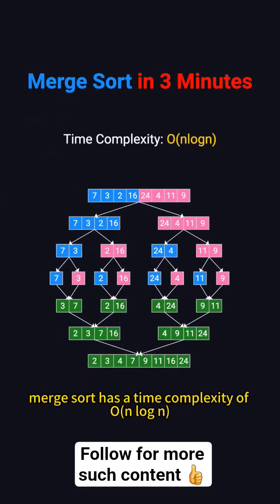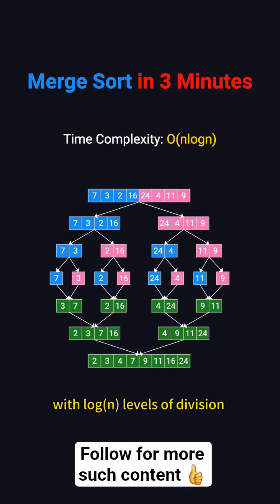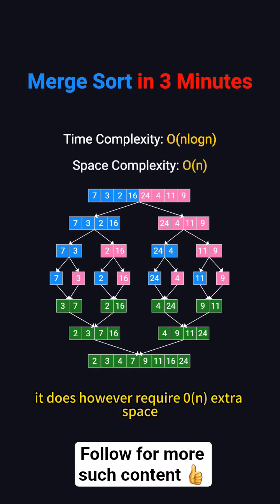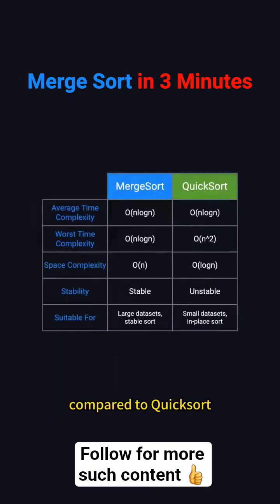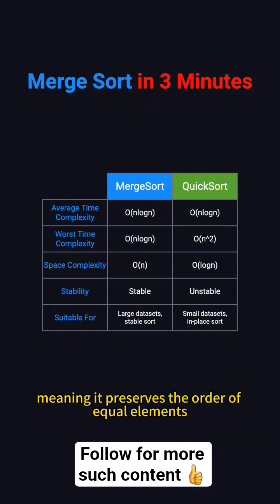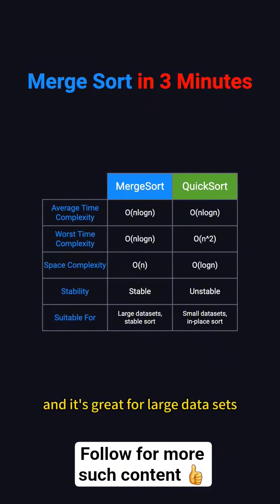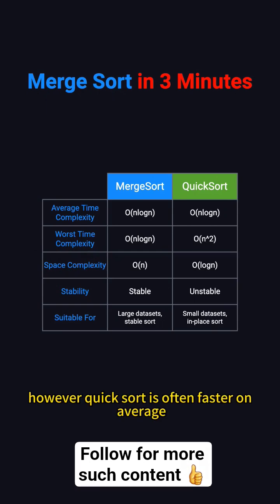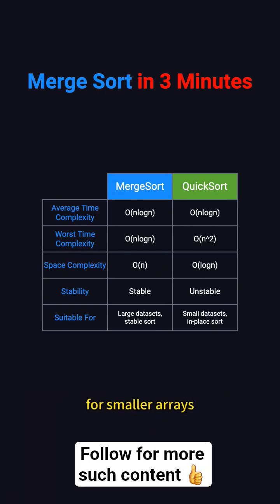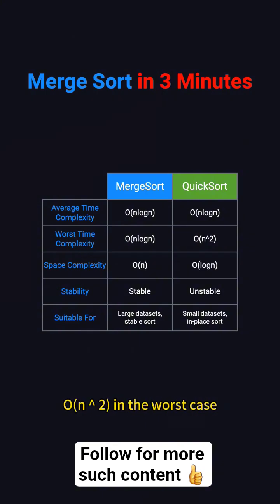Merge Sort has a time complexity of O(N log N), with log N levels of division and O(N) merging at each level. It does, however, require O(N) extra space. Compared to Quick Sort, Merge Sort is stable, meaning it preserves the order of equal elements, and it's great for large data sets. However, Quick Sort is often faster on average and more space efficient for smaller arrays, though it can degrade to O(N²) in the worst case.